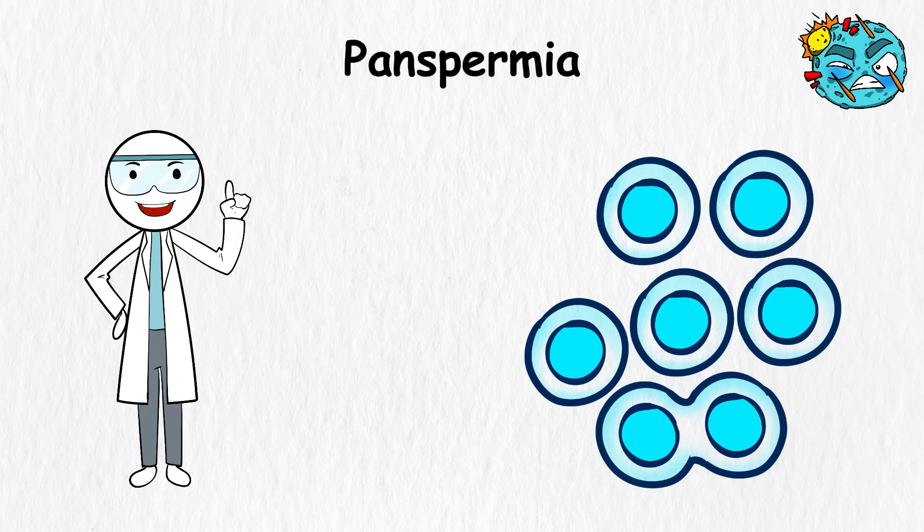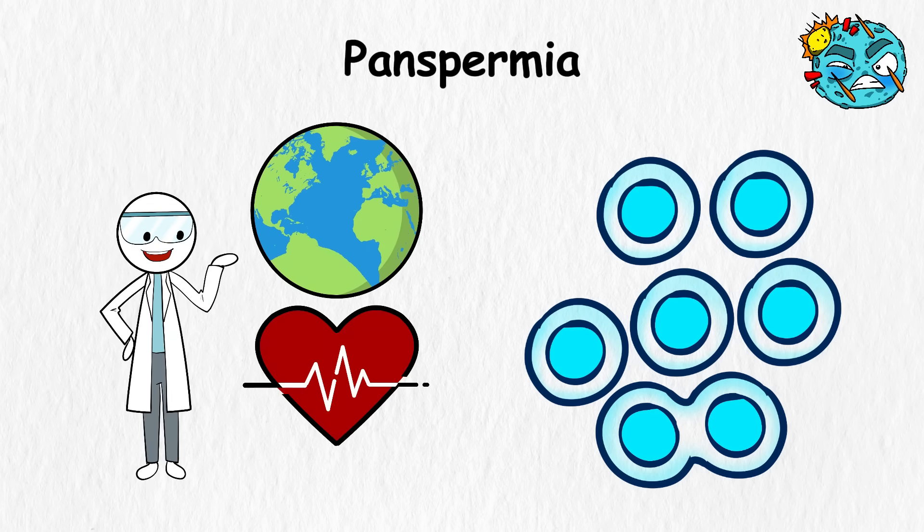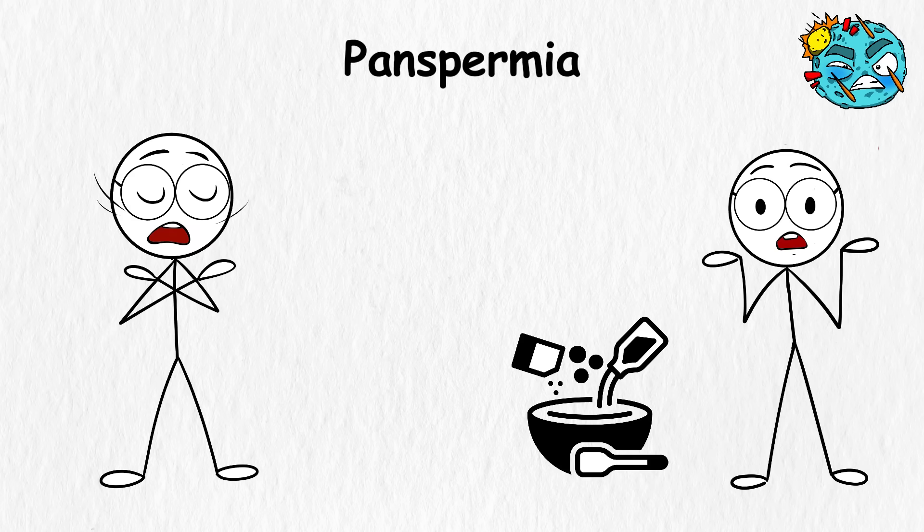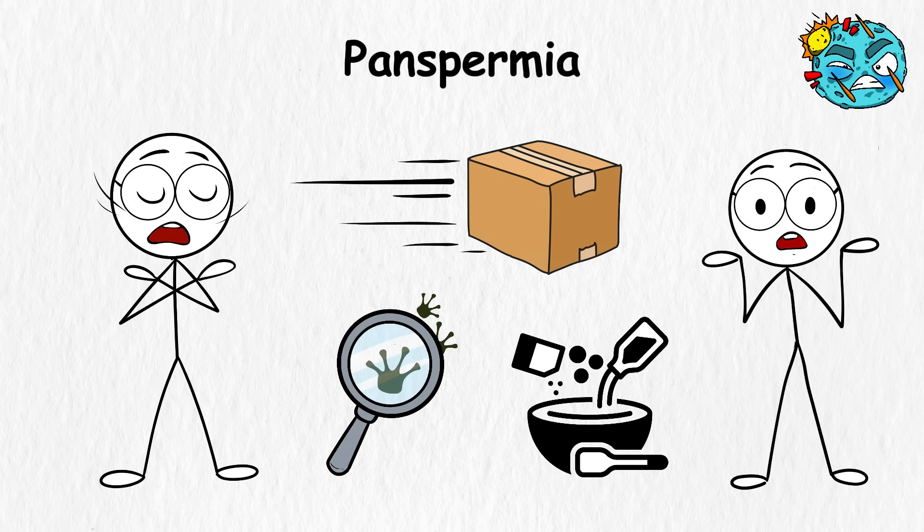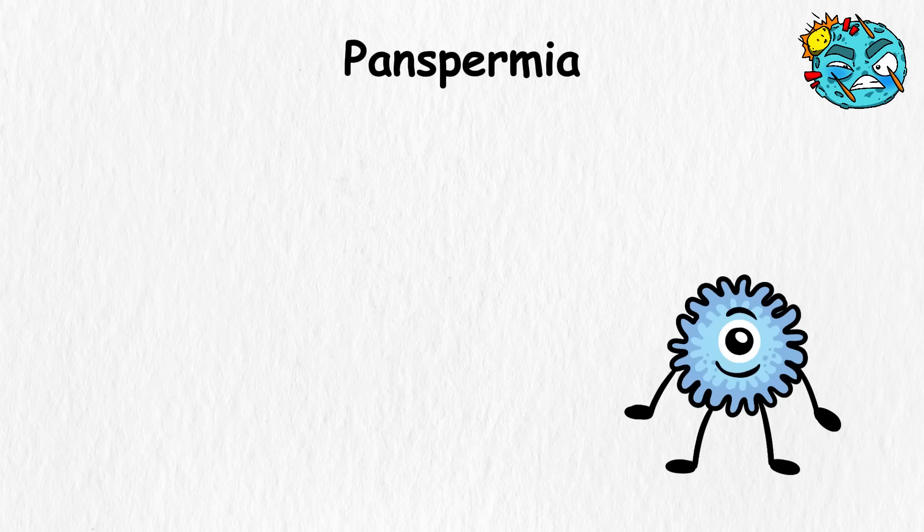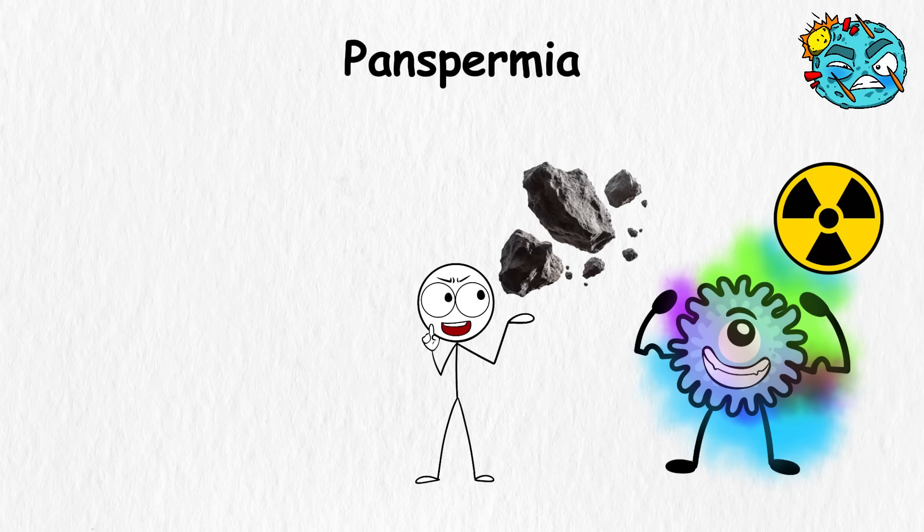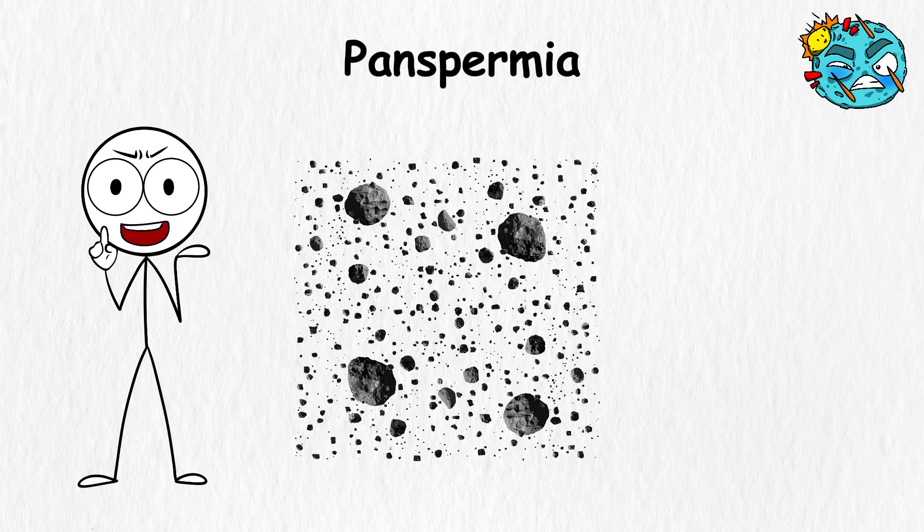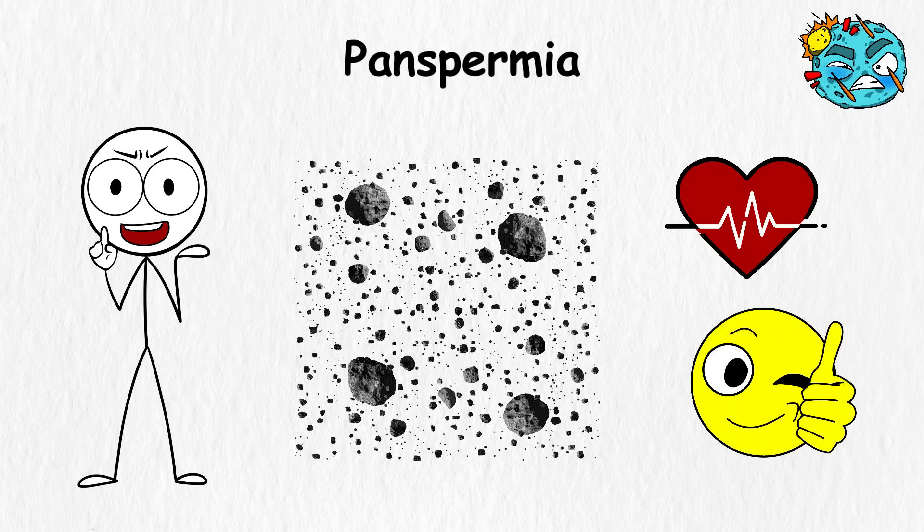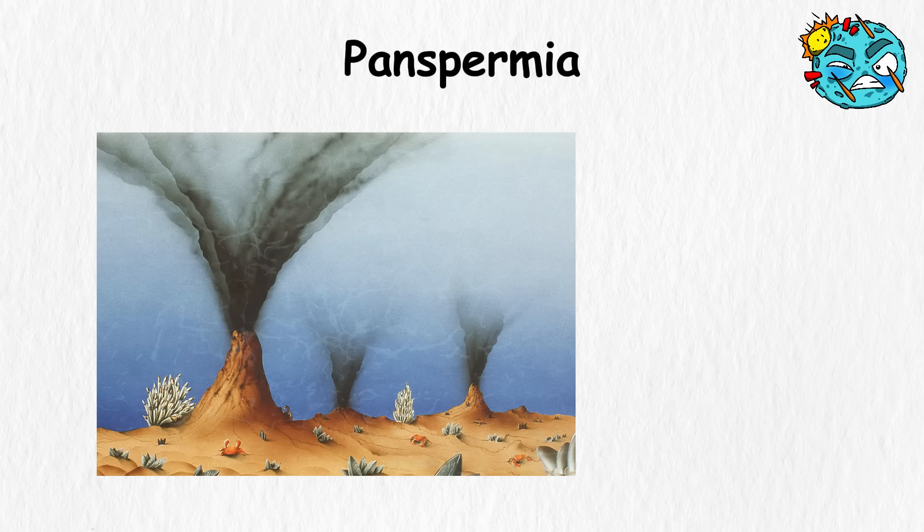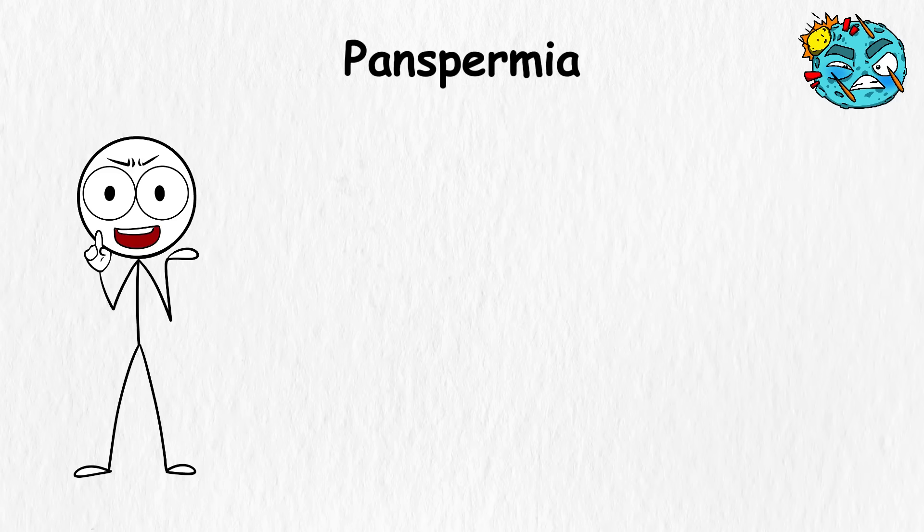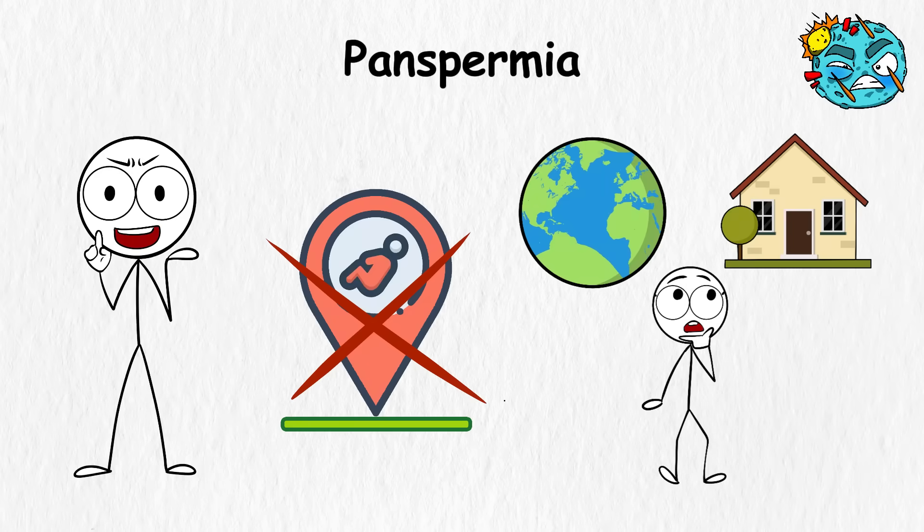Some scientists like this theory because Earth's early life showed up fast. Almost too fast. Maybe that's because the ingredients didn't start here. They were delivered. There's no solid proof, but a few clues keep it alive. Bacteria can survive harsh radiation. Some meteorites have organic stuff in them. In space, it's full of rocks with nowhere to be. If panspermia is right, then life didn't begin in a volcano or deep-sea vent. It came from somewhere far away, riding space debris like the universe's most patient traveler. If this is true, the Earth might be our home, but not our birthplace.